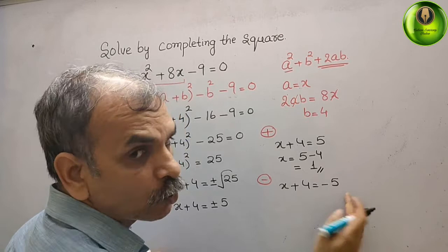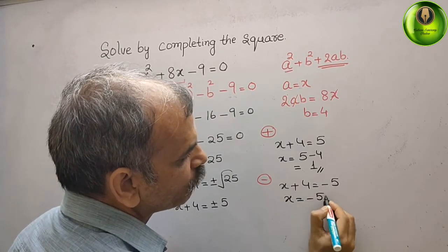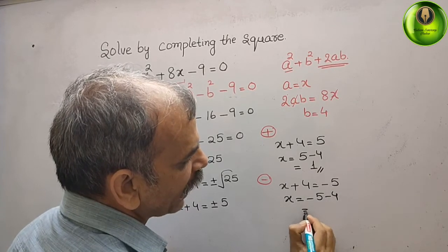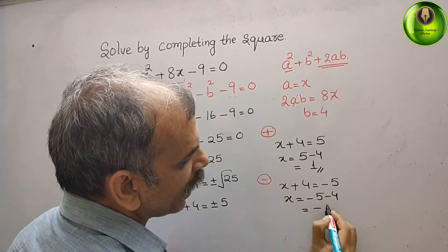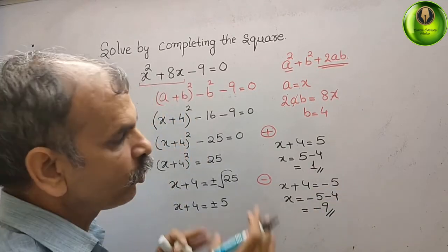Bring this 4 to right side, it will be minus. x is equal to -5 - 4. That means x is equal to -9. So these are the two solutions for your x.